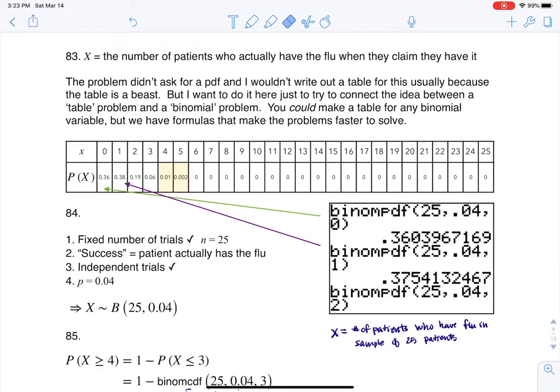Hey Math 43, I had a question coming out of Chapter 4, Number 84. This is where we were told that a nurse commented that when a patient calls the advice line claiming they have the flu, the chances they actually have the flu are about 4%, and 25 patients are going to call.